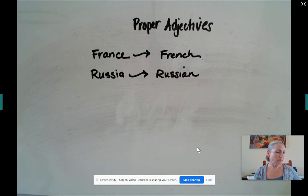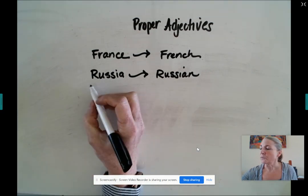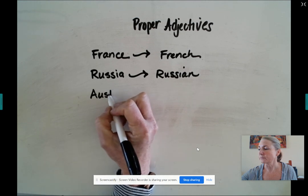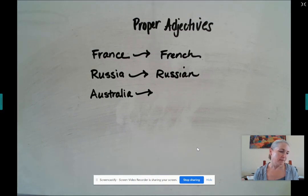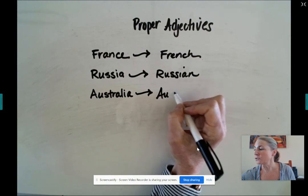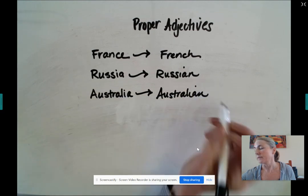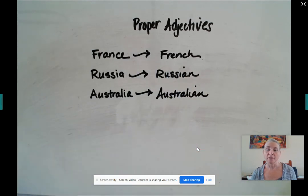Let's take a look at some other examples — it's really going to be country-driven today. If we had Australia and I wanted to talk about animals in Australia, I would say they are not Australia animals, but they are Australian animals. You'll often see this I-A-N ending, but not always. We have France to French. We don't call them Frenchians — that would sound kind of odd. We call them French.